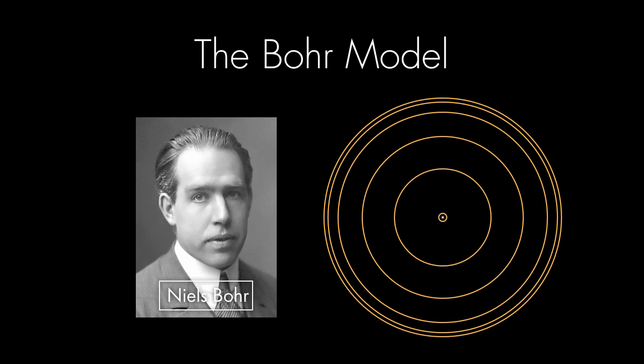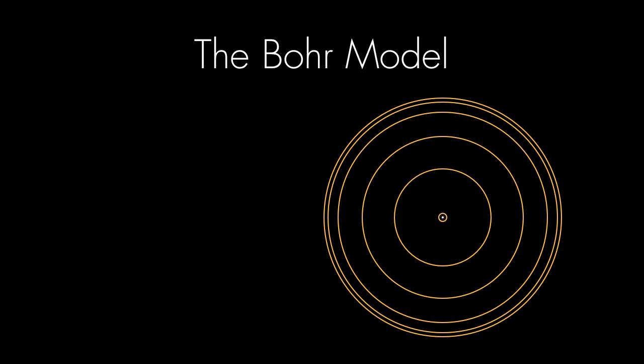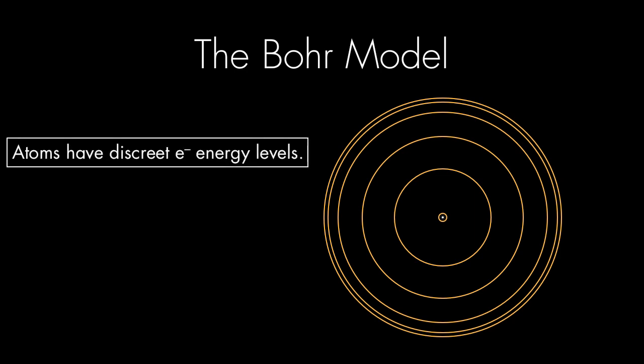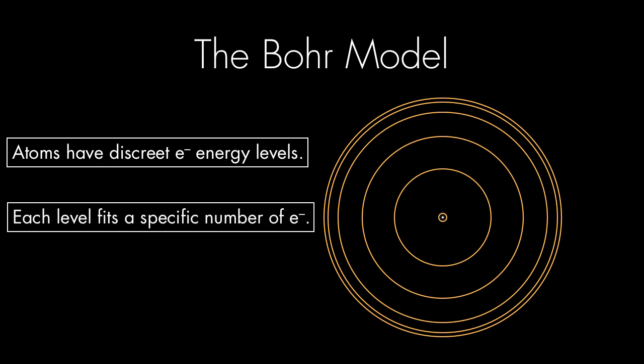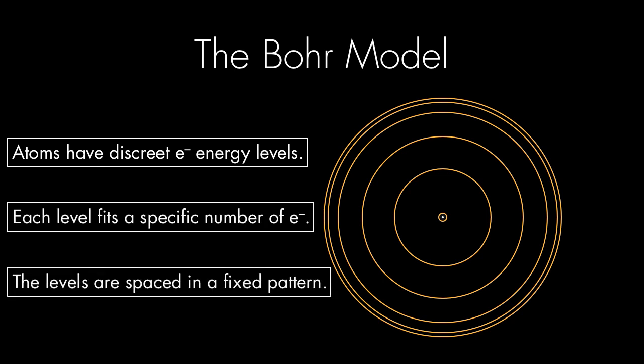This is the Bohr model of the atom. It's a lot like what we've seen before, but there's three key features. According to the Bohr model, all atoms have discrete electron energy levels. Each level can hold a specific number of electrons, and these levels are spaced apart in a fixed pattern.